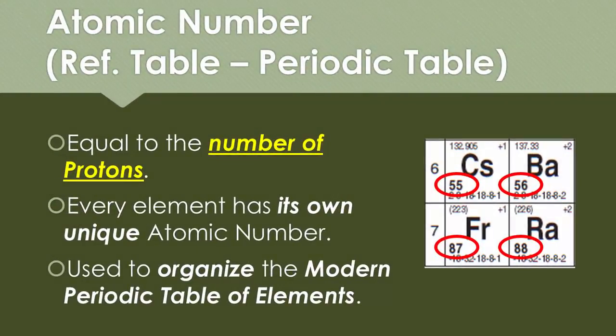Atomic number, which you can find in your reference table on the periodic table. As you can see in the picture, they're the circled numbers on the bottom left hand corner. They're equal to the number of protons in the nucleus of every atom. So it is very unique to every element because as we said in the last video, protons are unique to the atom.